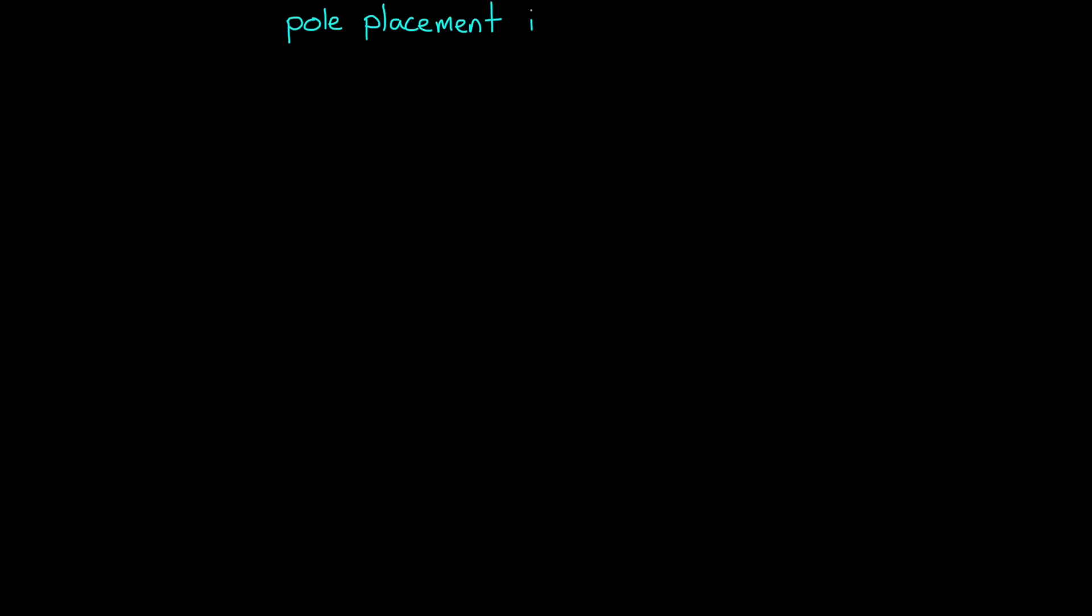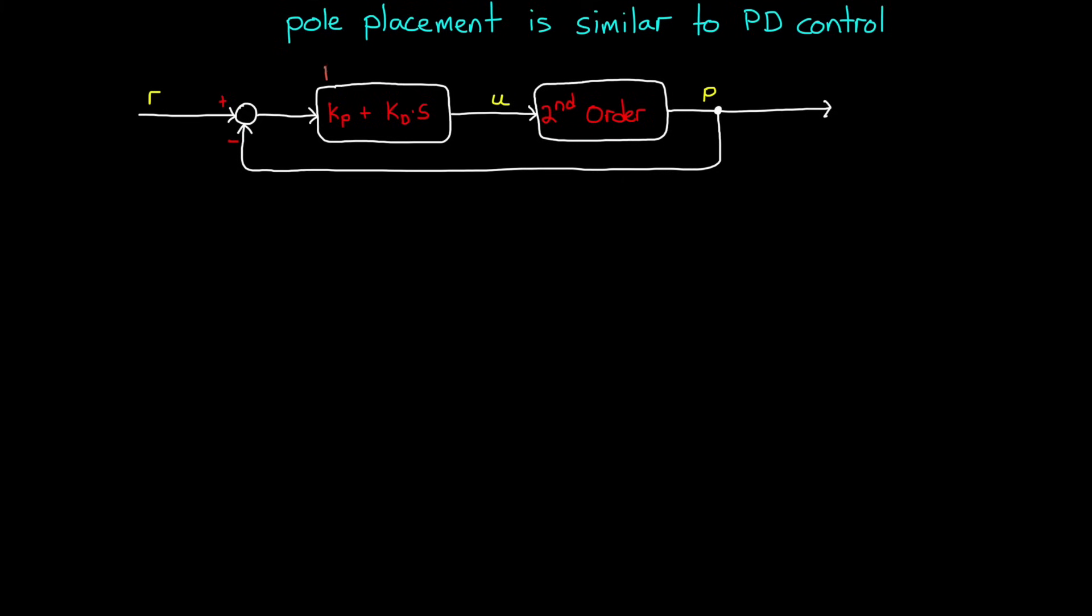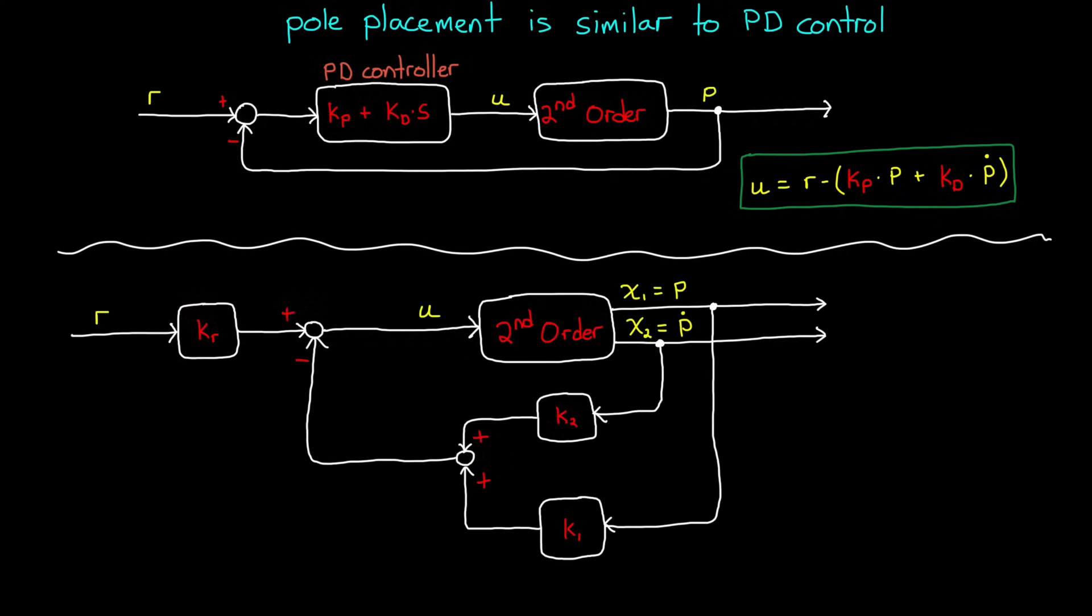A two-state pole placement controller is very similar to a PD controller. With PD, you feed back the output and generate the derivative within the controller. With pole placement, you are feeding back the derivative as a state, but the results are essentially the same. Two gains, one for a state and one for its derivative.